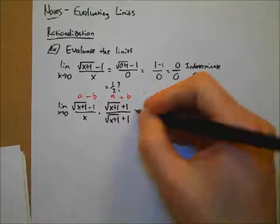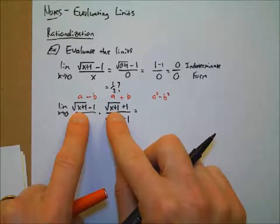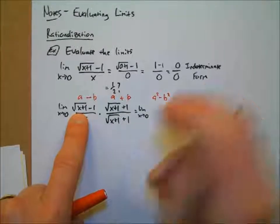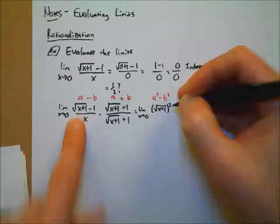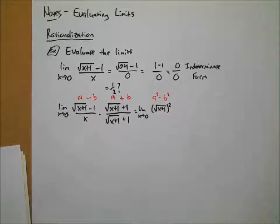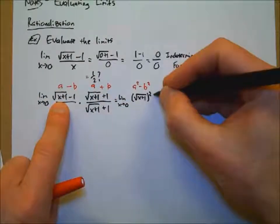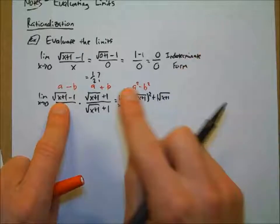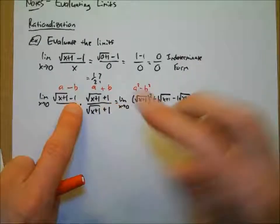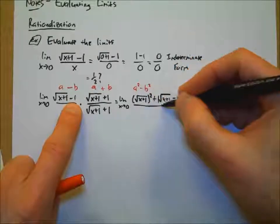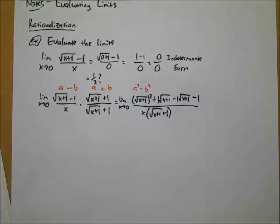You can also just FOIL this out. Multiplying the first: root x plus one times root x plus one is root x plus one quantity squared, or just x plus one simplified. The outer gives plus one times root x plus one. The inner gives negative one times root x plus one. Those two cancel. The last is negative one times positive one, which is negative one. All over x times the quantity root x plus one plus one in the denominator. I'd recommend against distributing that denominator — you'll see why in just a second.